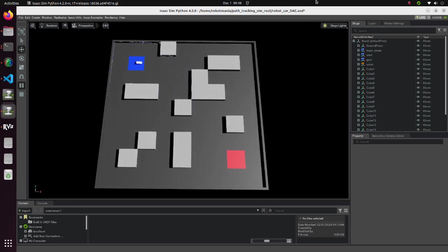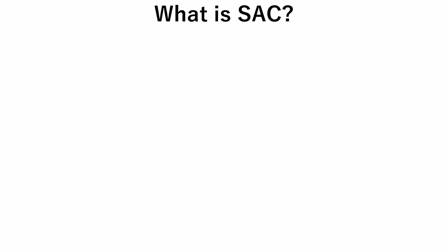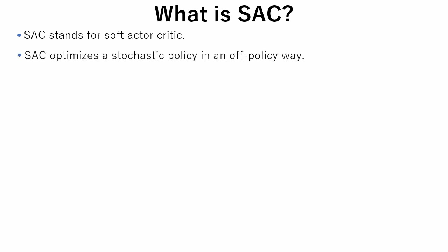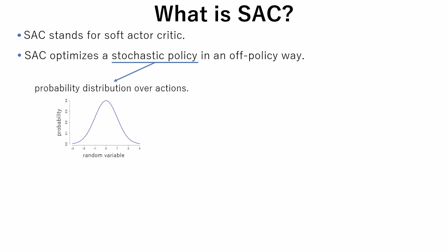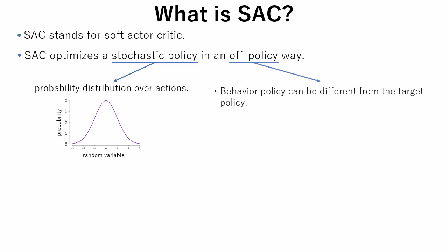In this tutorial, we will use SAC as a reinforcement learning method. Let's see what SAC is. There is a lot of detailed literature about this method, so in this tutorial we will see it only briefly. SAC stands for Soft Actor Critic. SAC optimizes a stochastic policy in an off-policy way. Stochastic means that it learns a probability distribution over actions. Off-policy means that behavior policy can be different from the target policy, and it can learn from past experience stored in a replay buffer.